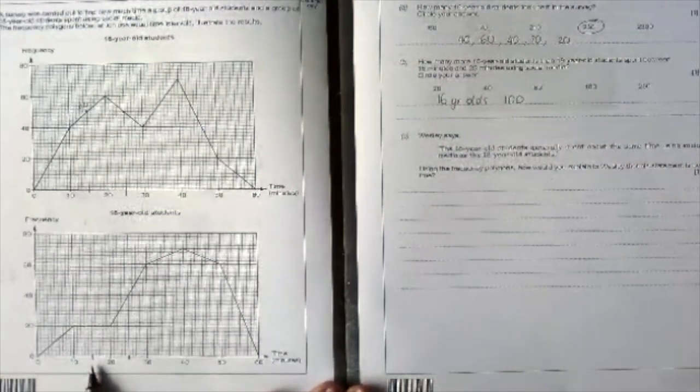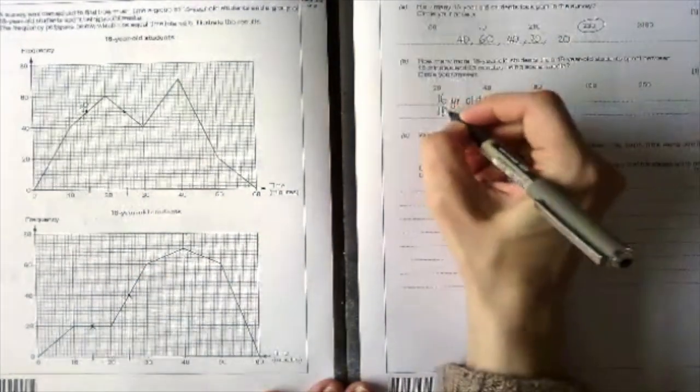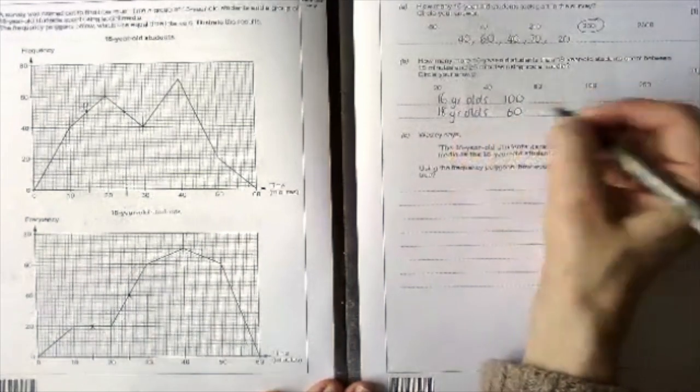For the 18-year-olds down here we've got 20 and we've got 40. So for the 18-year-olds our total is 60. So the difference between them is 40.